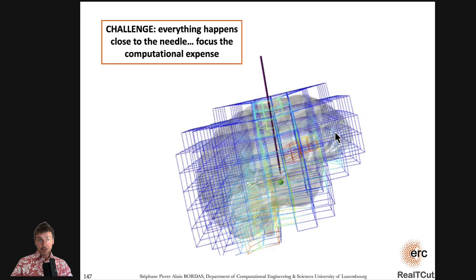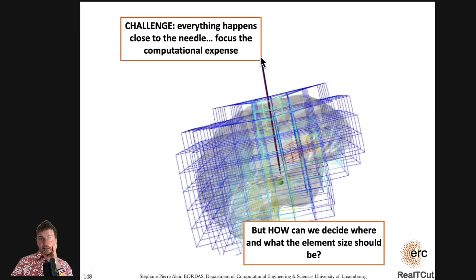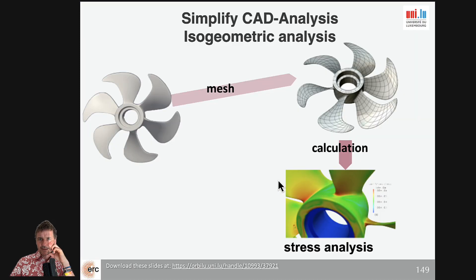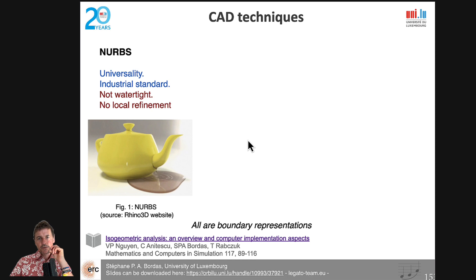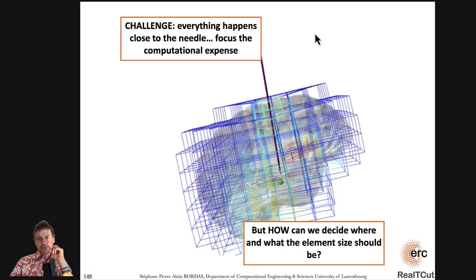What is difficult here is that everything happens close to the needle and almost nothing happens elsewhere. We cannot have a very fine mesh because we want to solve in real time — we can deal with maybe 10,000 elements, but not more. How do we decide where to refine and where not to refine? Can we use partition of unity enrichment? Can we use implicit interfaces? These questions are answered in the papers given before, where we computed the error using the approach I described. If you're interested, I can give a short lecture about how we did that exactly, because I think it's quite useful.